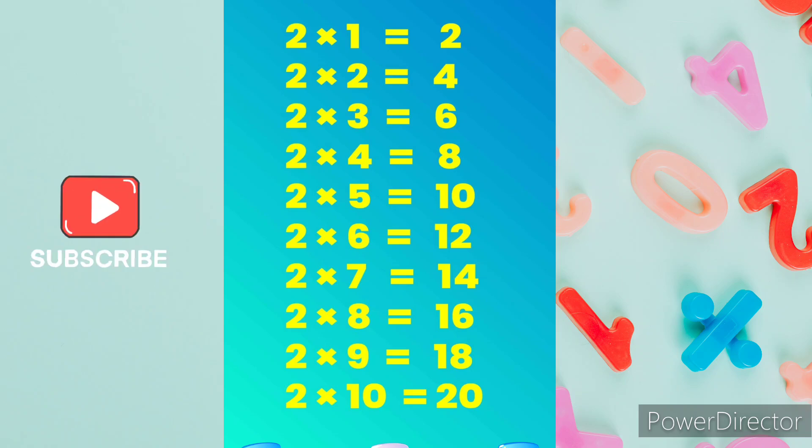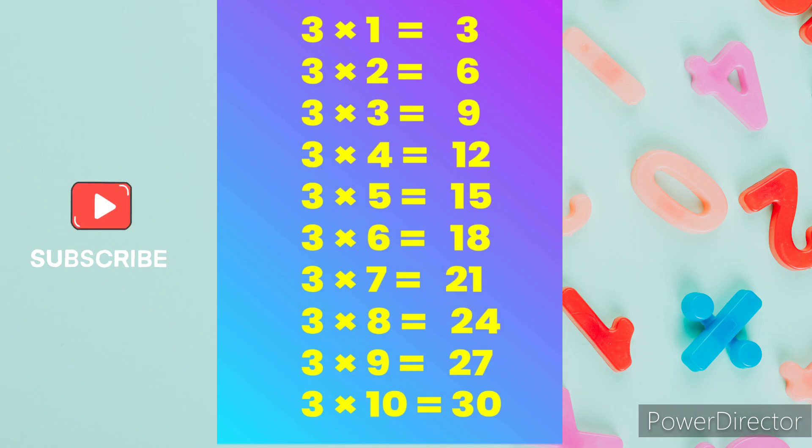2 6s are 12, 2 7s are 14, 2 8s are 16, 2 9s are 18, 2 10s are 20. Table of 3.